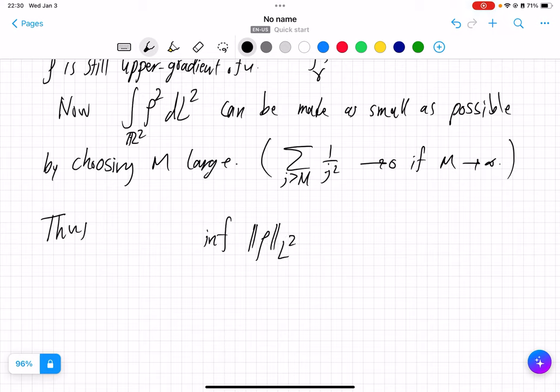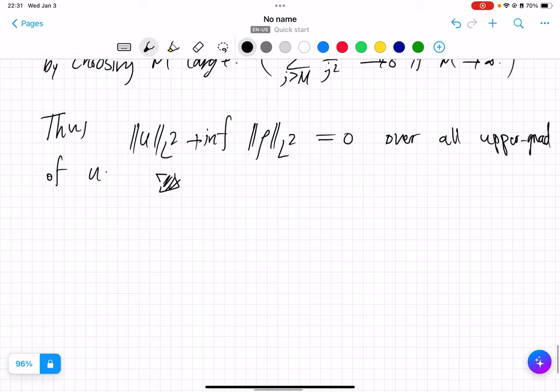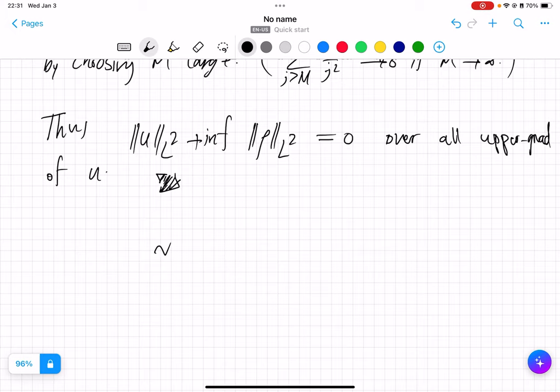And that's the end of the story. The L^2 integral of u is 0 itself. So this finishes the example. So we've come up with a non-zero function that is in N^{1,2} but nevertheless its norm is 0, and that explains the reason why we have to quotient out with respect to that relation.